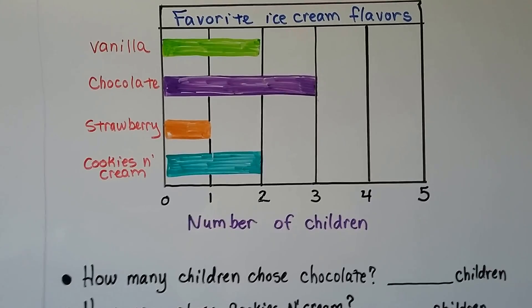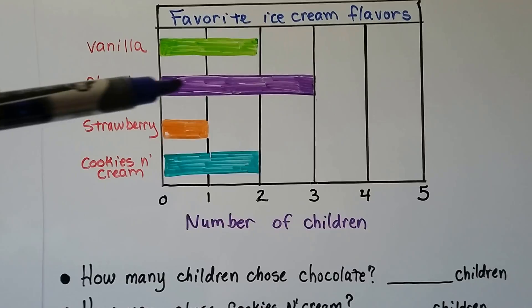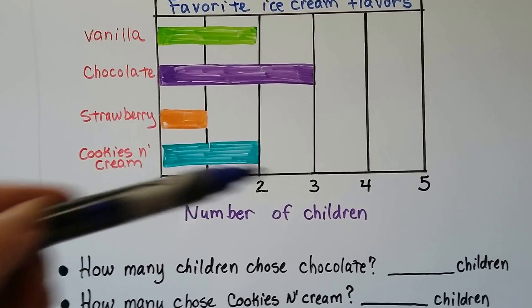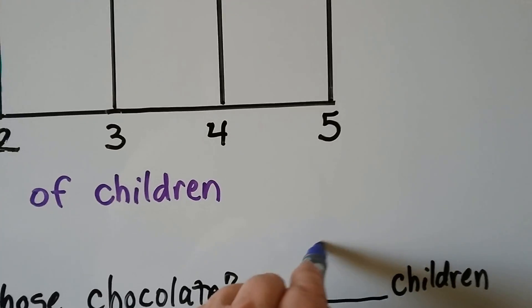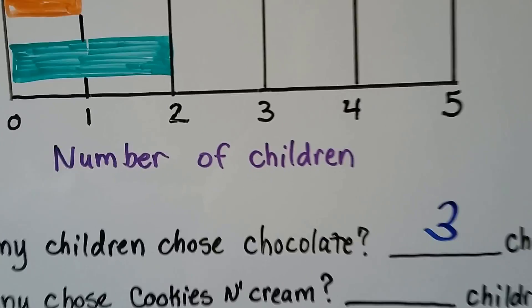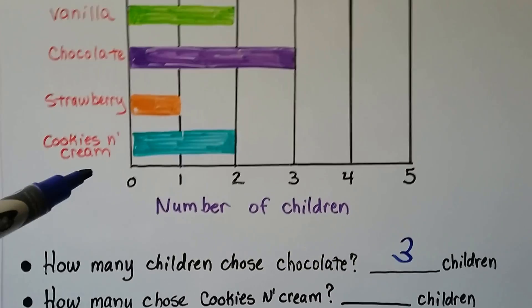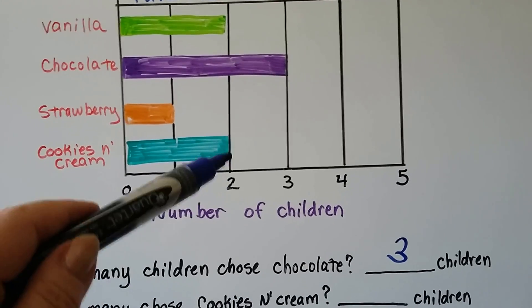How many children chose chocolate? We go to the chocolate, follow the bar, and look down to the scale and see it's three. Three children chose chocolate. How many chose cookies and cream? We find cookies and cream, follow the bar, look at the scale, and it says two.